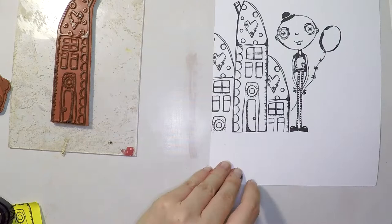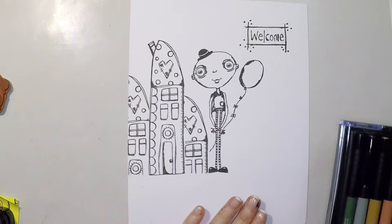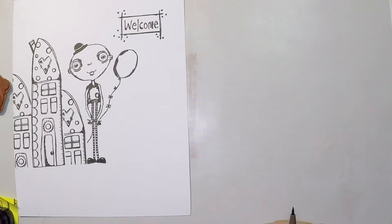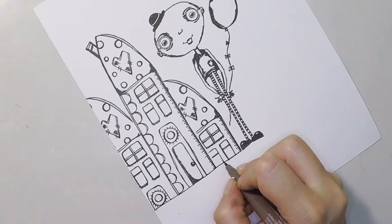And then I will create my base using the Pitt Artist pen by Faber Castell. One of the browns. And I will just simply create a line on the bottom part. This is an Indian ink pen so it is waterproof and it will resist the ink of my re-inkers without smudging.